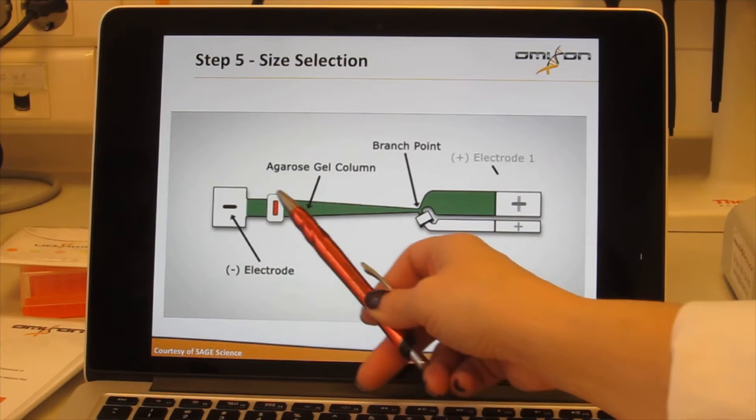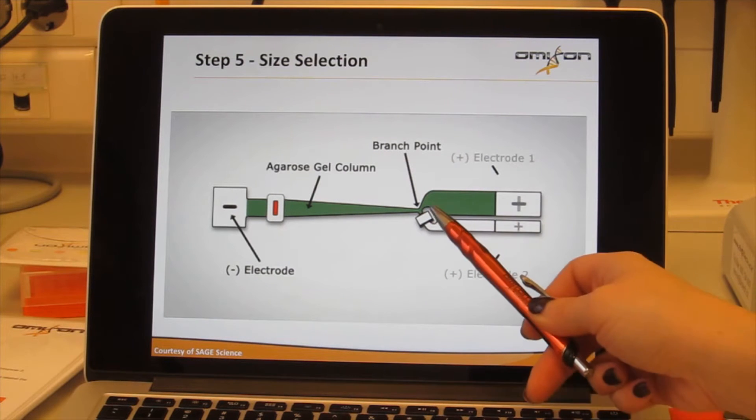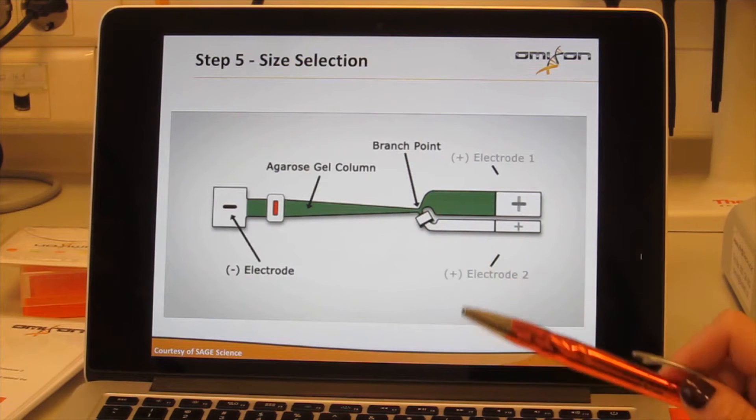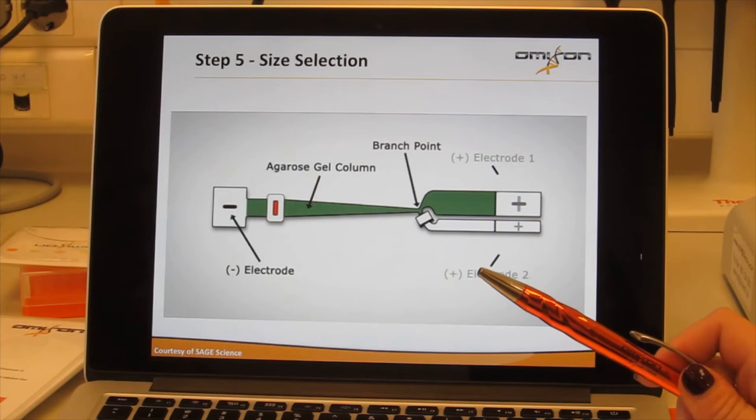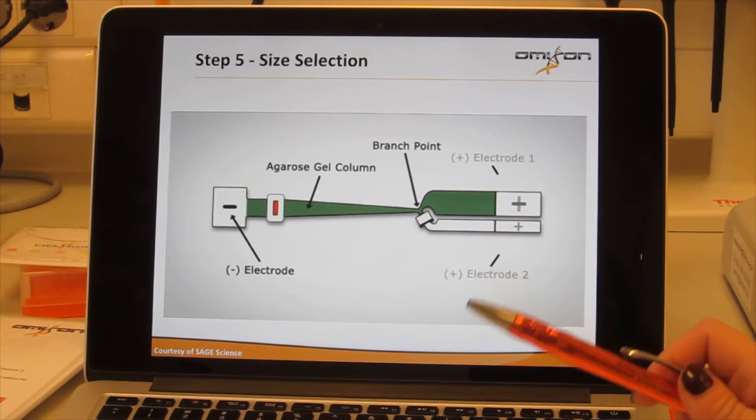There is also a loading port right here where the red is. That's where we load our library, and then there is a collection chamber on the side on the branch with no agarose, and that's where the library gets collected after the size selection.